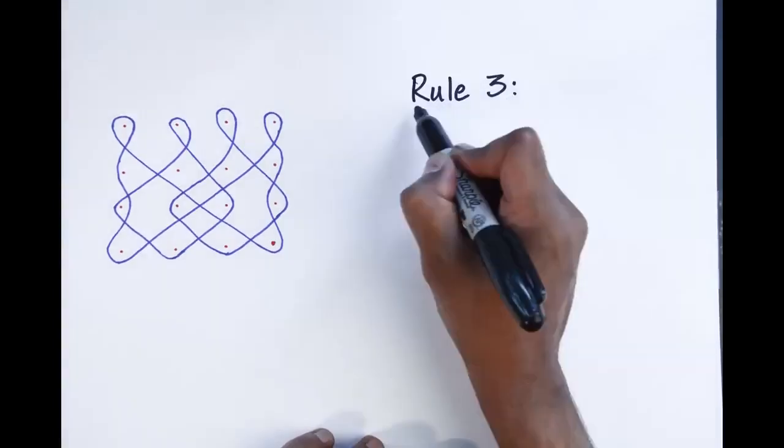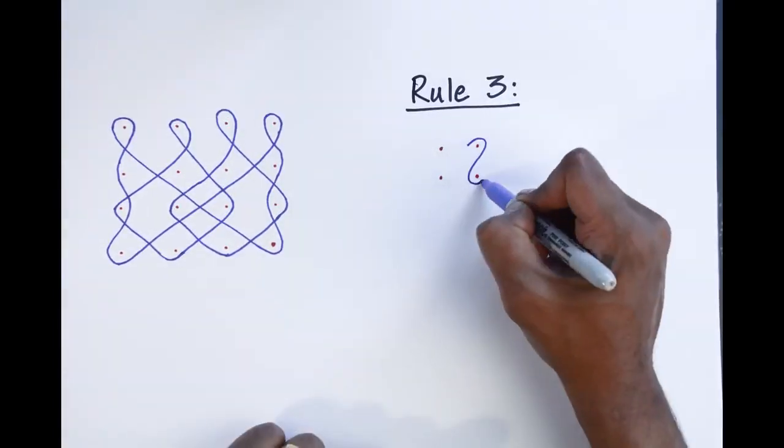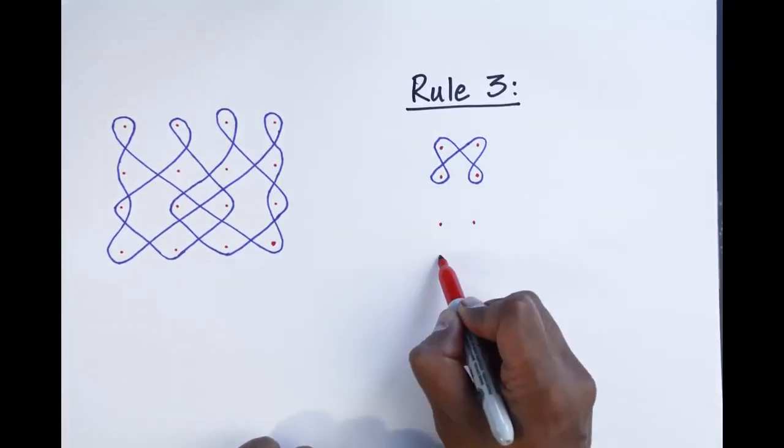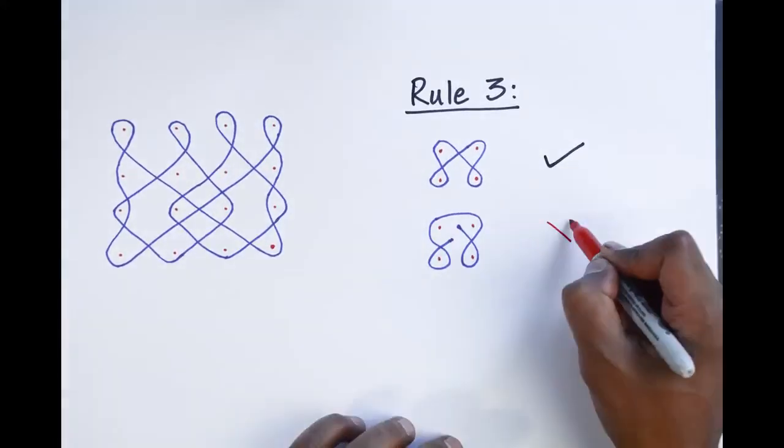Rule three, all line orbits should return where they begin. That is, no loose ends.